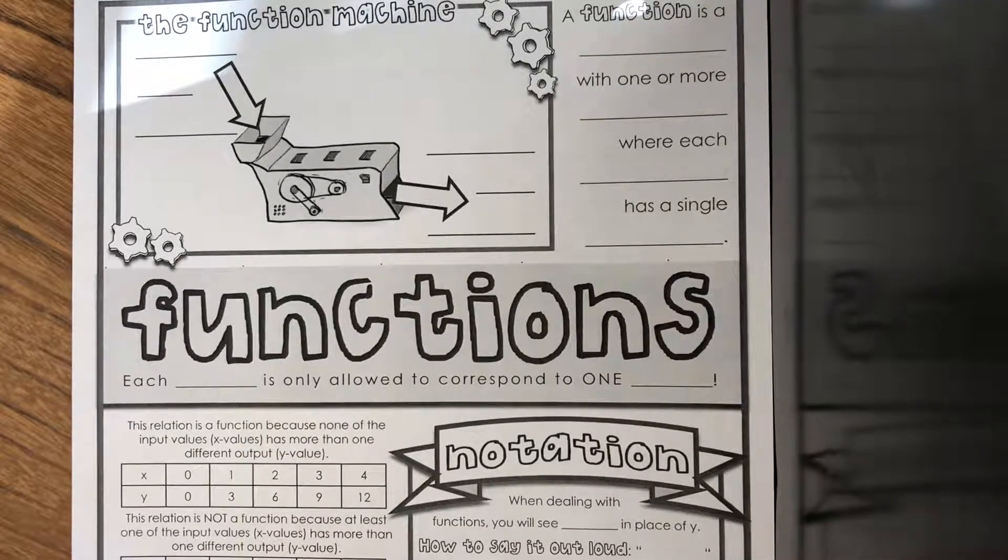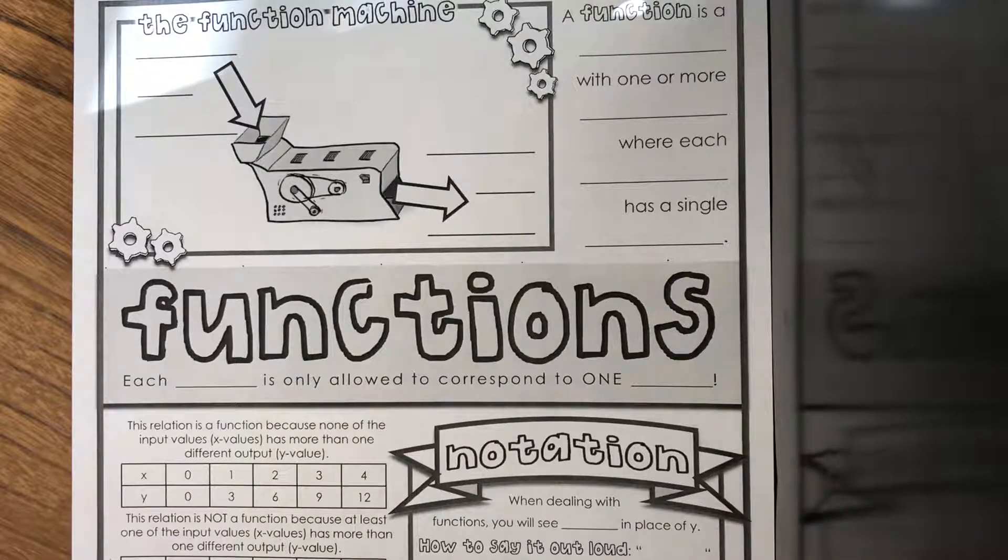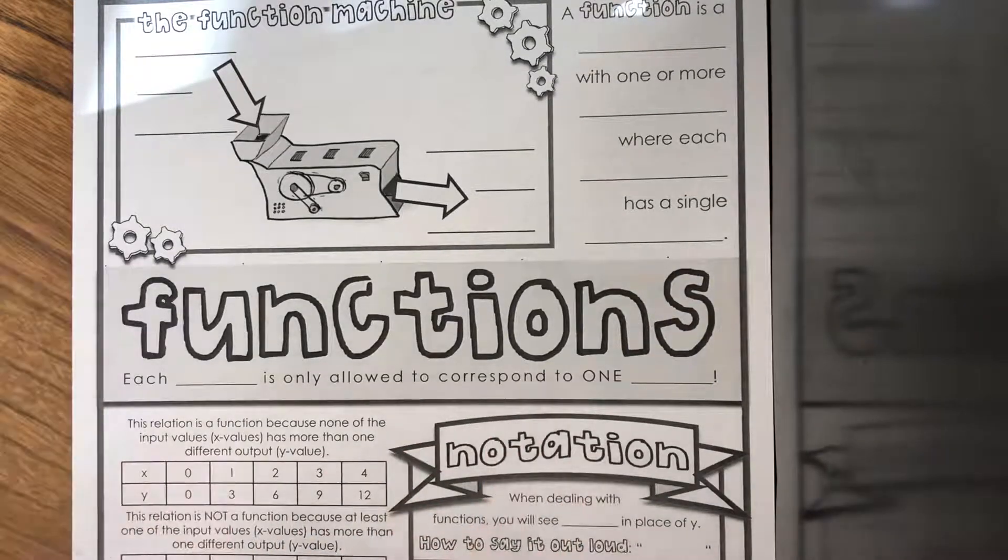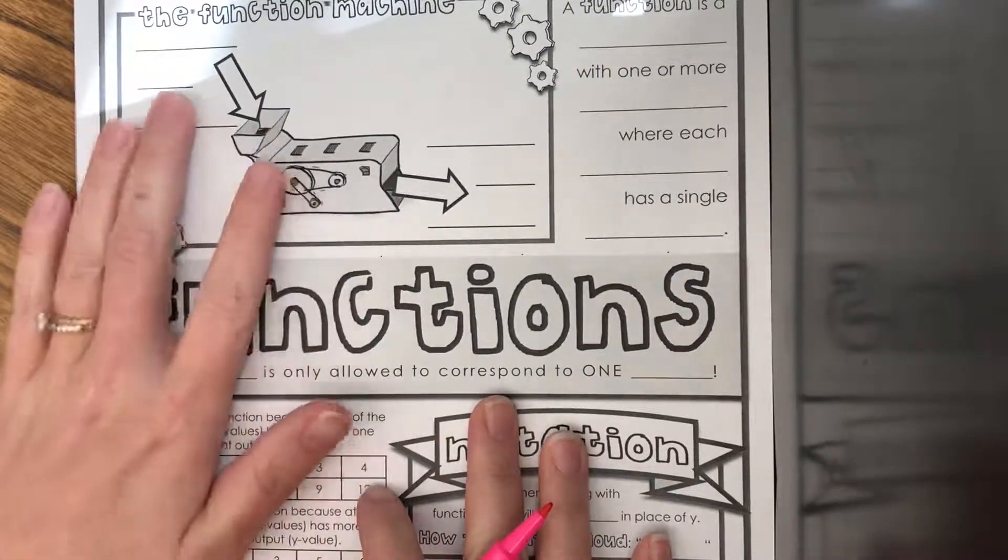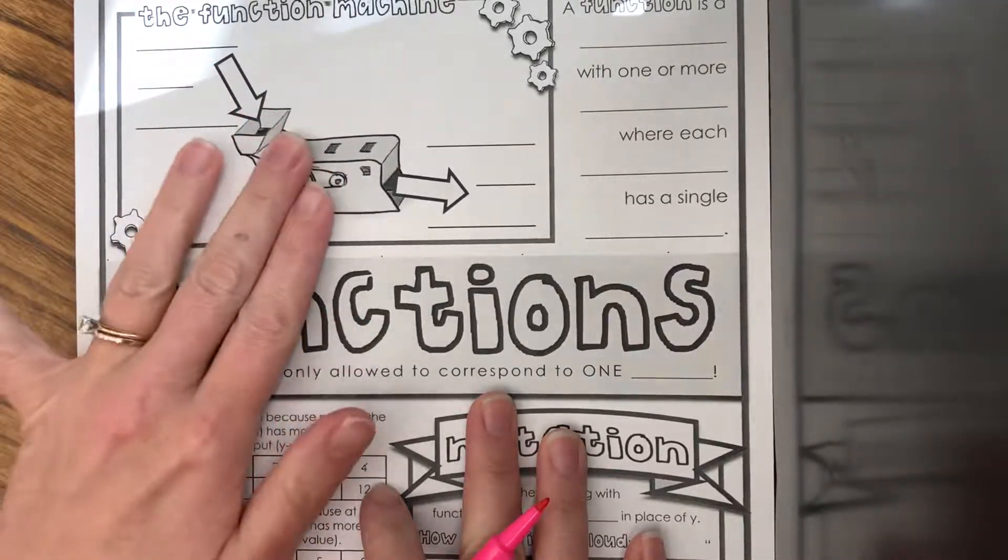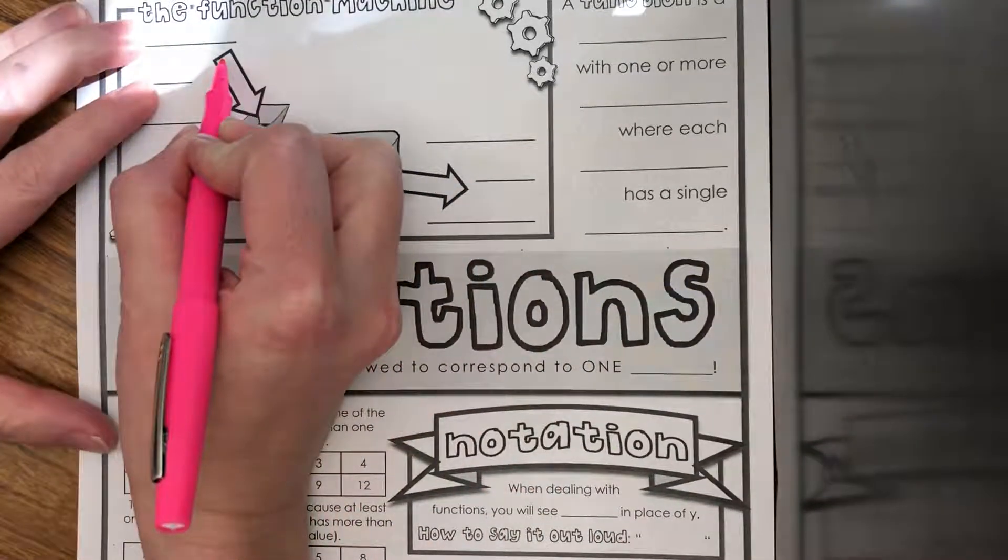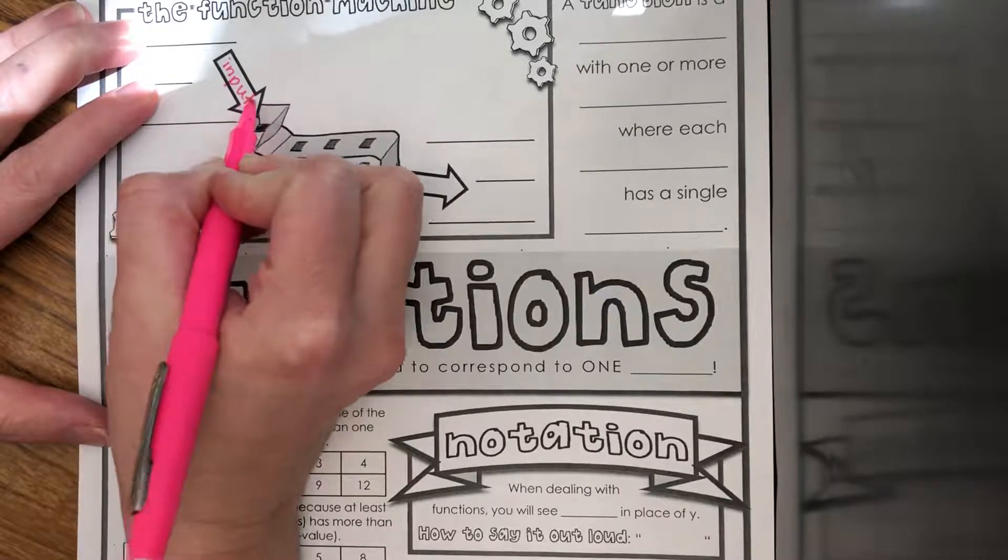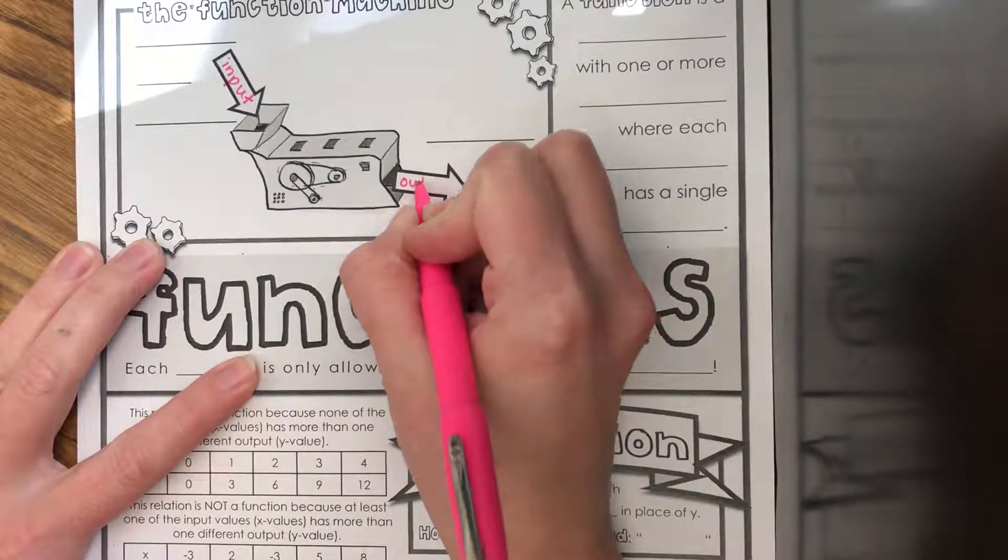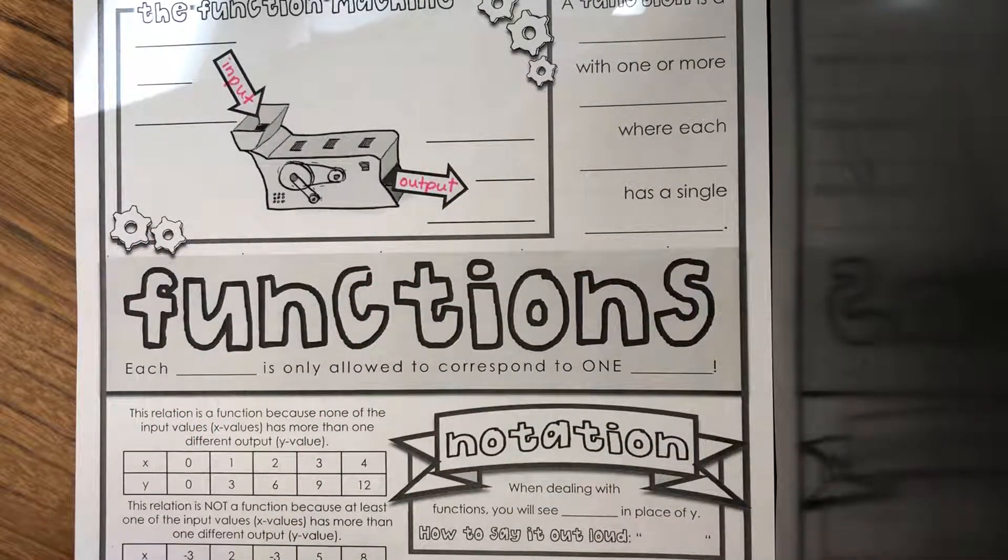If you are watching this tutorial video, hopefully you watched the metamorphosis video to get an understanding of what a function is. But basically, if you didn't watch that, think about a machine. There's something that goes into a machine, something happens in the machine, and something comes out. What goes in we call the input and what comes out of the machine we call the output.